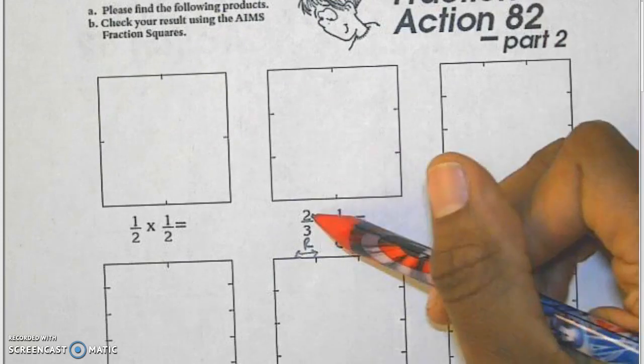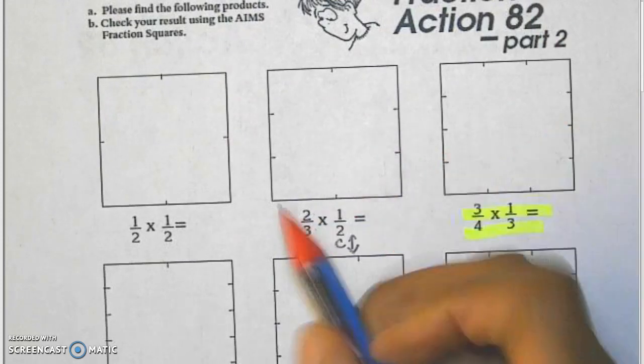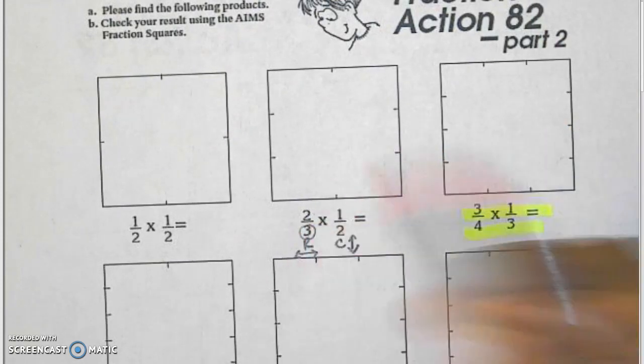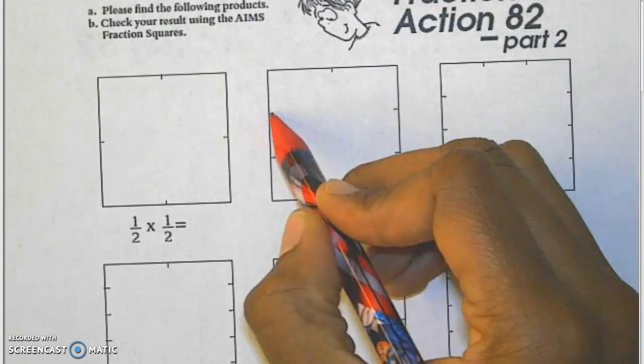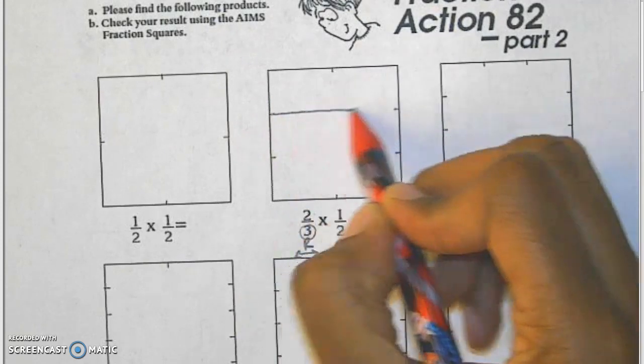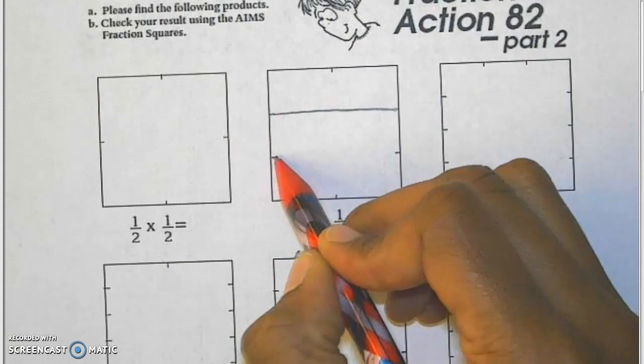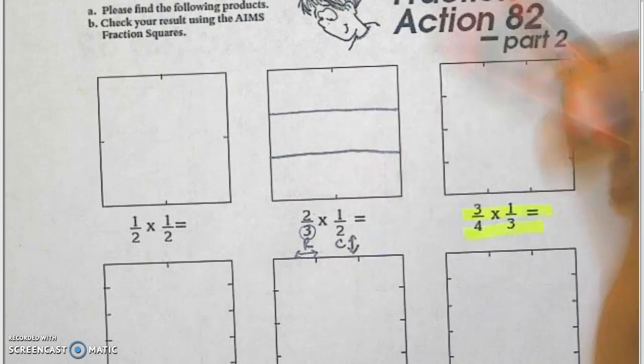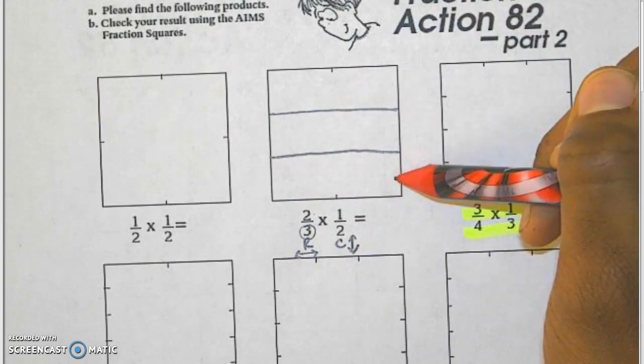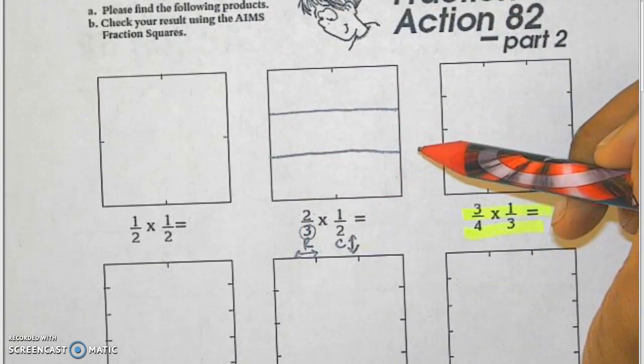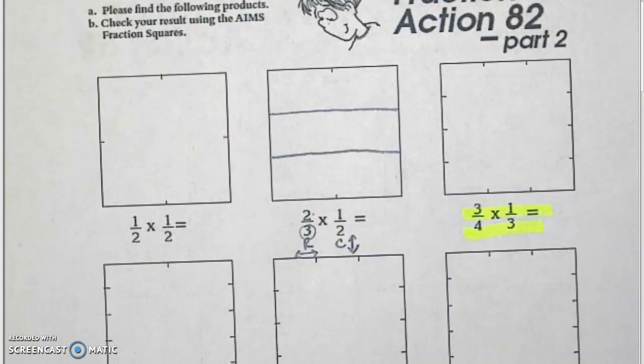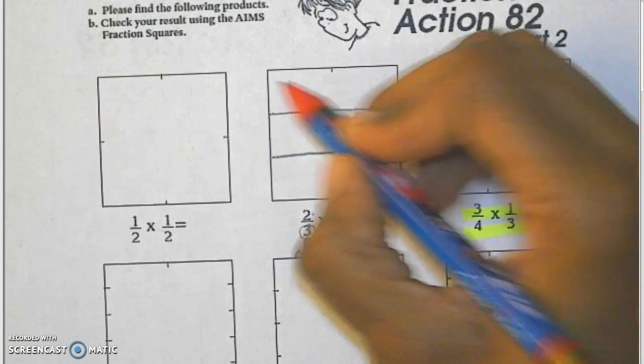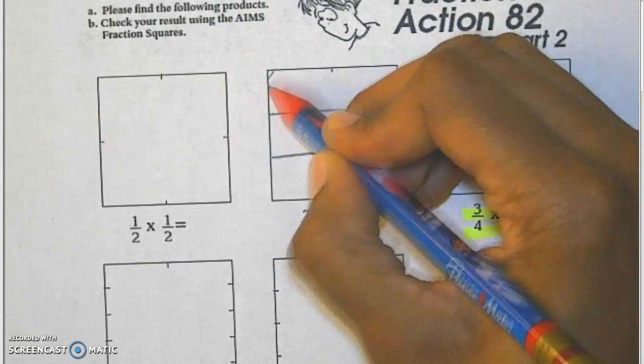My first fraction has a denominator of three so I'm going to take my area model and break it into thirds. Again I'm going left to right and now I have one, two, three sections. My numerator tells me that I need to shade two out of three of these and if you don't have a color pencil this is one of the ways you can shade.